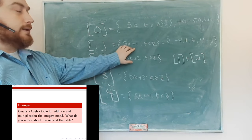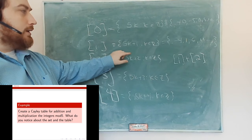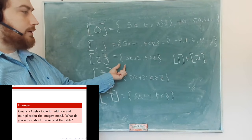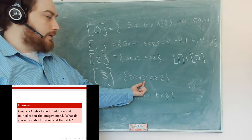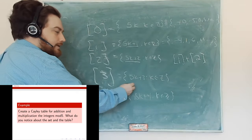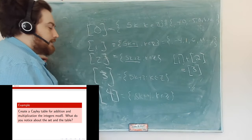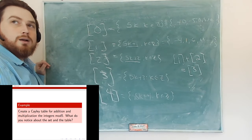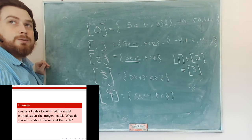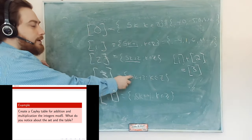The claim is: if I take any element of the form 5k₁+1 and add any element of the form 5k₂+2, I get 10k+3, and since 10k is a multiple of 5, the remainder is 3. So any element of the class of 1 plus any element of the class of 2 lands in the class of 3. Therefore, the equivalence class of 1 plus the equivalence class of 2 equals the equivalence class of 3.